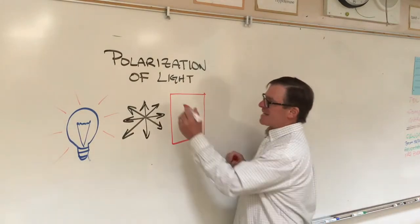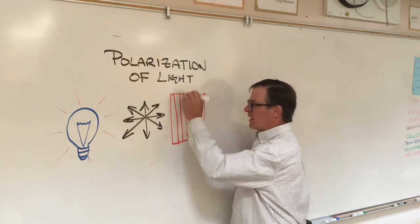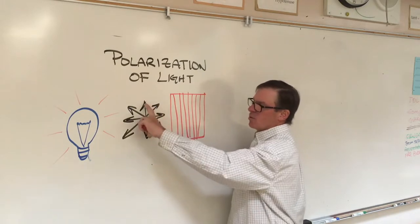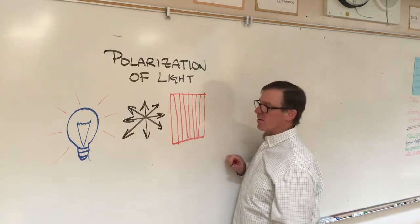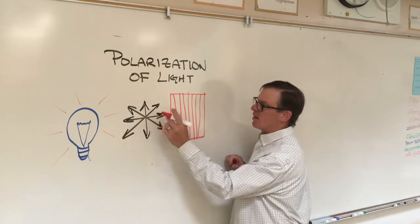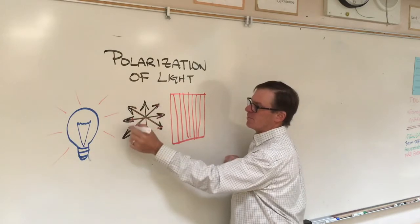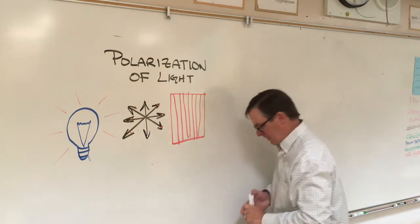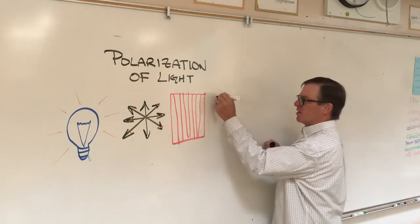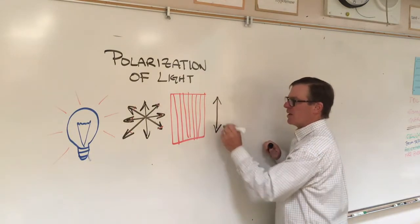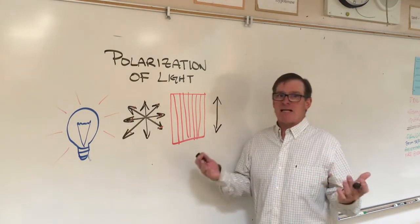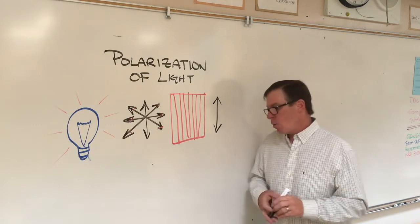If the axis of the polarizer is oriented vertically, then it only lets through the vertical component of the light. All of this is blocked. And so what comes through is only the vertically oriented light. How do we know that that's true? I mean, can we test that? It sounds like magic to me.